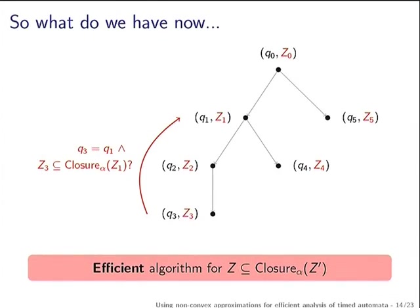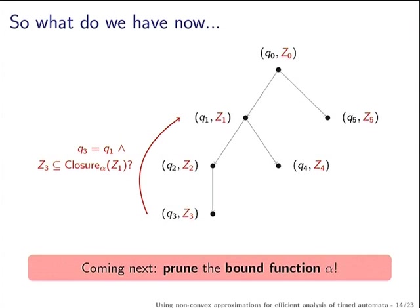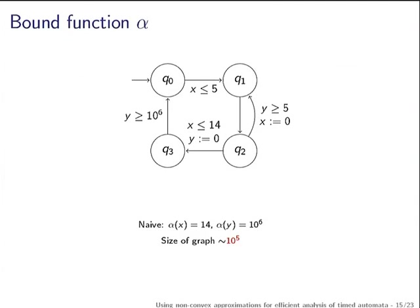We compute the normal zone graph and use this efficient closure inclusion test for termination. The closure depends on a parameter alpha — a bound function that associates some constant to every clock. The smaller this bound function, the bigger the closure and the more useful it is. The next quest is to find a very good bound function. The naive way is to take the maximum constant occurring in any guard — for x you put 14 and for y you put 10^6 — resulting in a huge graph.